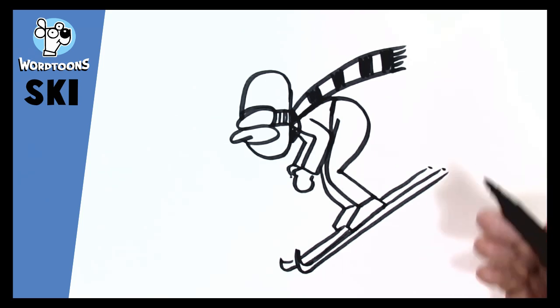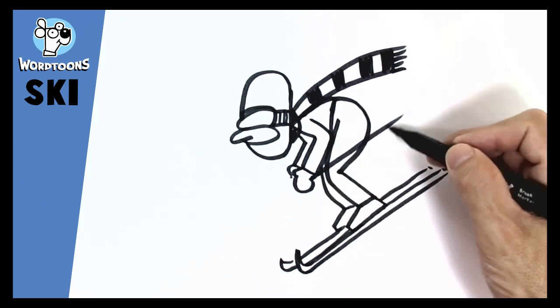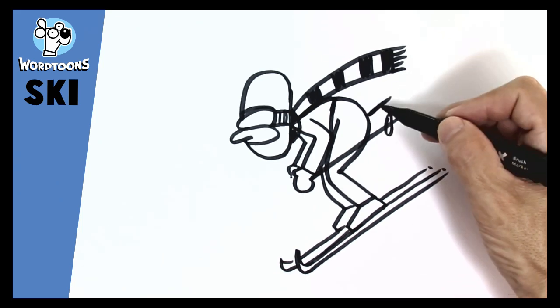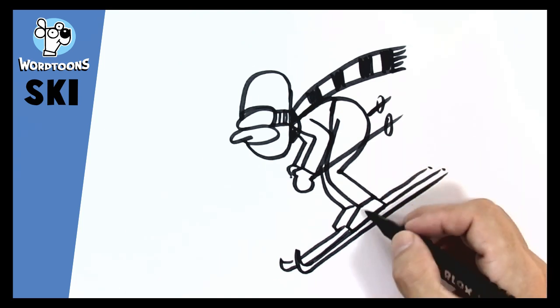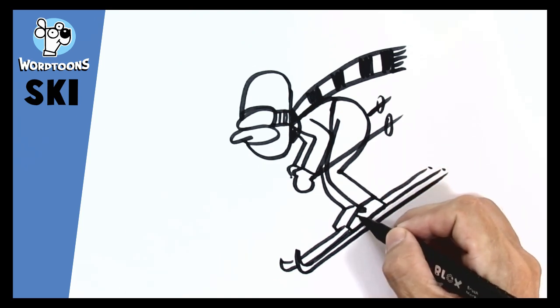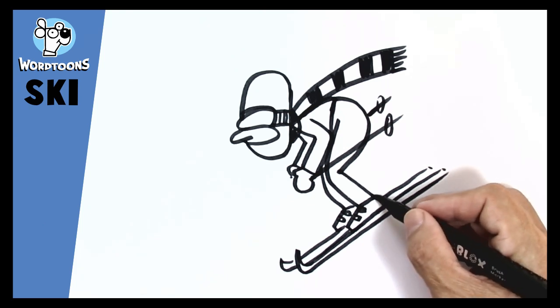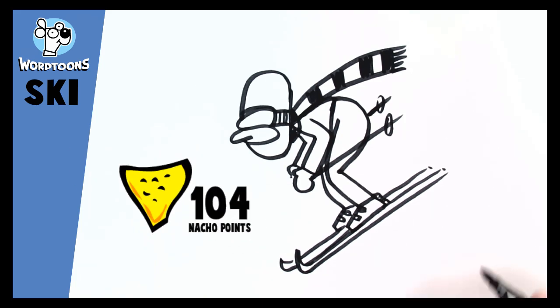He's got some skis but what else does he need? Well he needs the poles. So flick a line back, a little circle, and that's the one from the other side. There. And oh, well he needs on his boots. There we go. He's got little clips that go on the back of his skis.